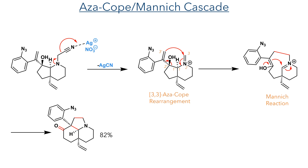With this in place, they can then carry out the critical aza-Cope/Mannich reaction cascade. The compound is reacted with silver nitrate, which coordinates to the nitrile group, promoting its elimination as silver cyanide. The resulting iminium intermediate is primed for a 3,3-aza-Cope rearrangement. The pi-electrons of the alkene can attack the iminium species, pushing the migration of the carbon-nitrogen double bond and the breaking of a carbon-carbon sigma bond. This forms an enol that can take part in a Mannich reaction, which nucleophilically attacks the iminium ion, forming a new carbon-carbon single bond together with a ketone. Overall, this transformation expanded the 5-membered ring to a 6-membered ring, oxidised the alcohol to a ketone, and introduced a new pyrrolidine ring to the polycyclic framework.